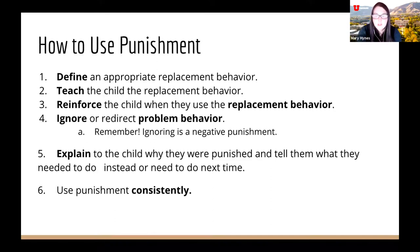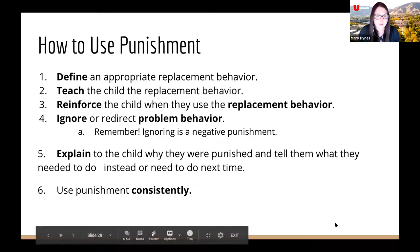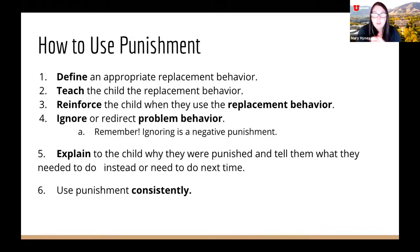If you punish the child, it's important to explain why and tell them what they need to do instead next time, so they learn the problem behavior is associated with the punishment — not that they had an aversive consequence for no reason. It's also important to use punishment consistently so the child learns the problem behavior is the cause of the punishment. If we aren't consistent, the problem behavior can actually worsen because it's being randomly reinforced — random reinforcement is very powerful.